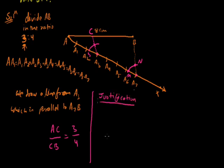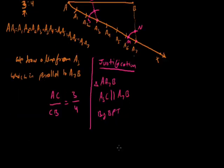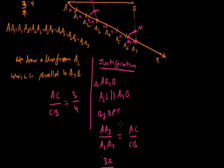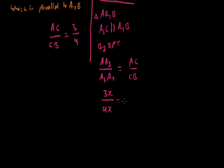In triangle A, A7, B — we see that A3C is parallel to A7B, which we made through construction. So by the Basic Proportionality Theorem, AA3 upon A3A7 equals AC upon CB. Since all parts are equal with unit X: AA3 = 3X and A3A7 = 4X. So 3X/4X = AC/CB, the X cancels, giving 3/4. Therefore AC:CB = 3:4. This is the justification.